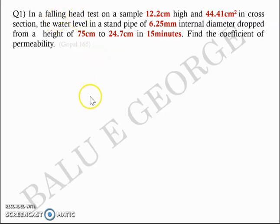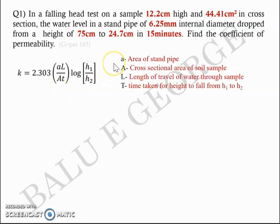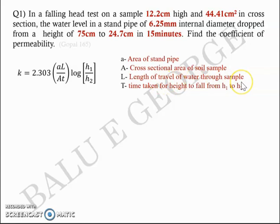This is a falling head test and the equation for coefficient of permeability is: K = 2.303 × (a·L) / (A·t) × log(h1/h2), where 'a' is the area of the standpipe — for which you are given the internal diameter — and capital A is the cross-sectional area of the sample, directly given as 44.41 cm². L is the length of travel of water through the sample, and t is the time taken for the height to fall from h1 to h2.